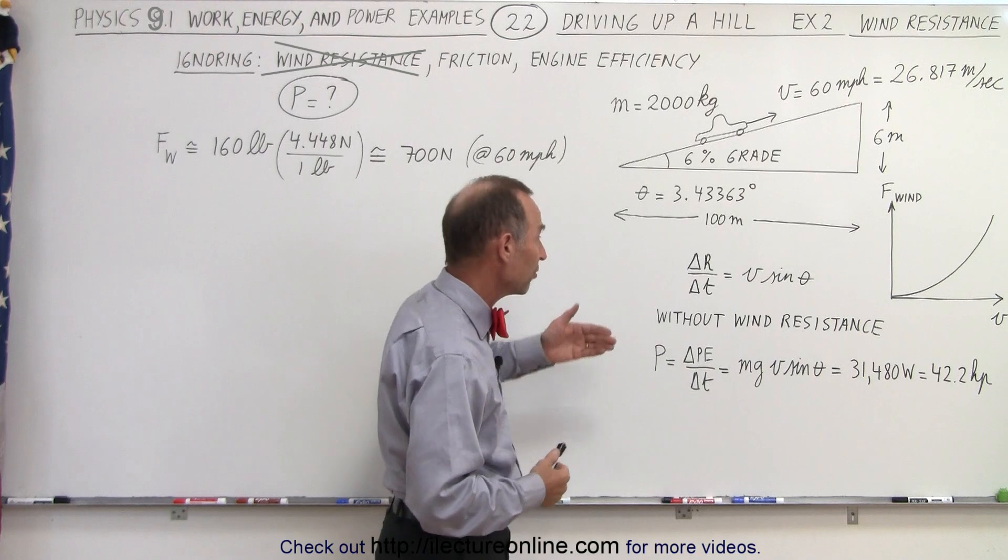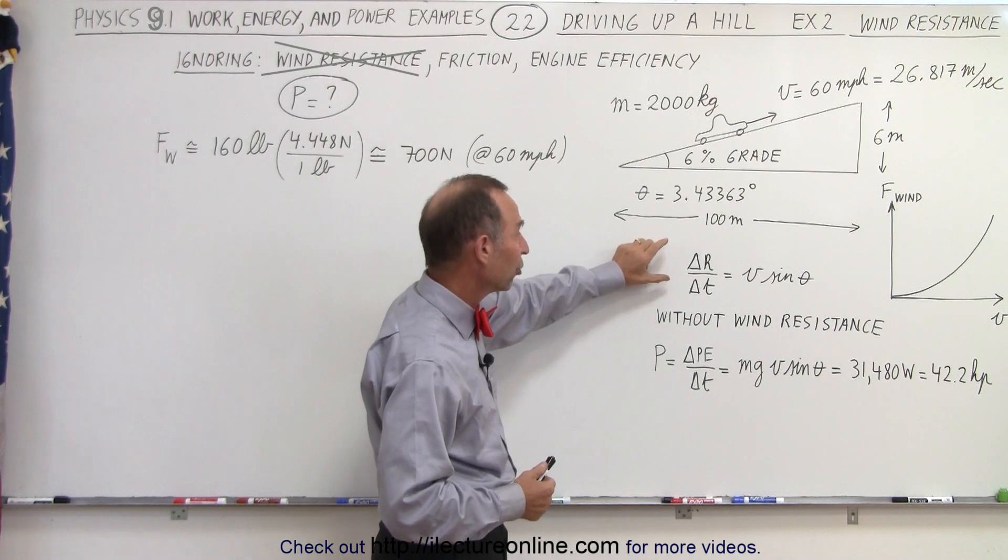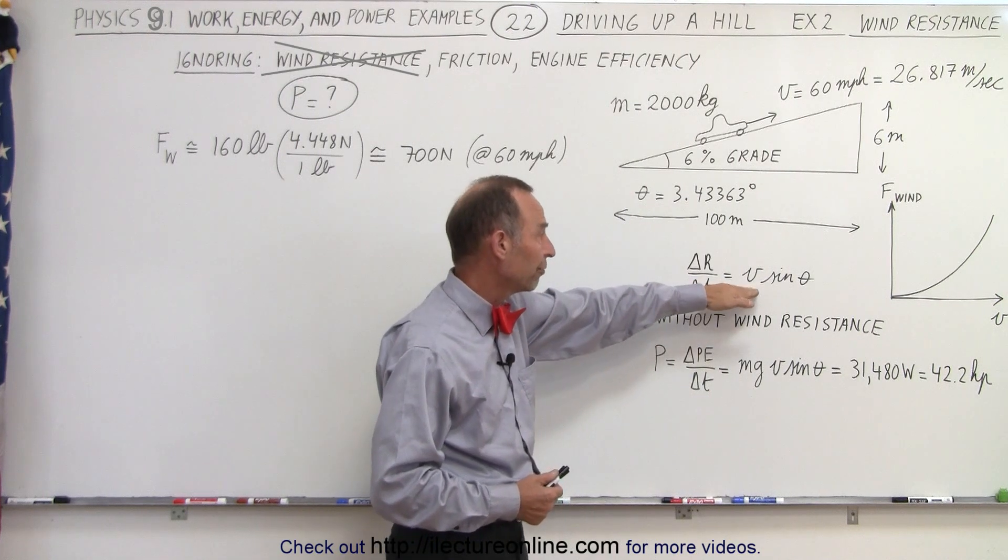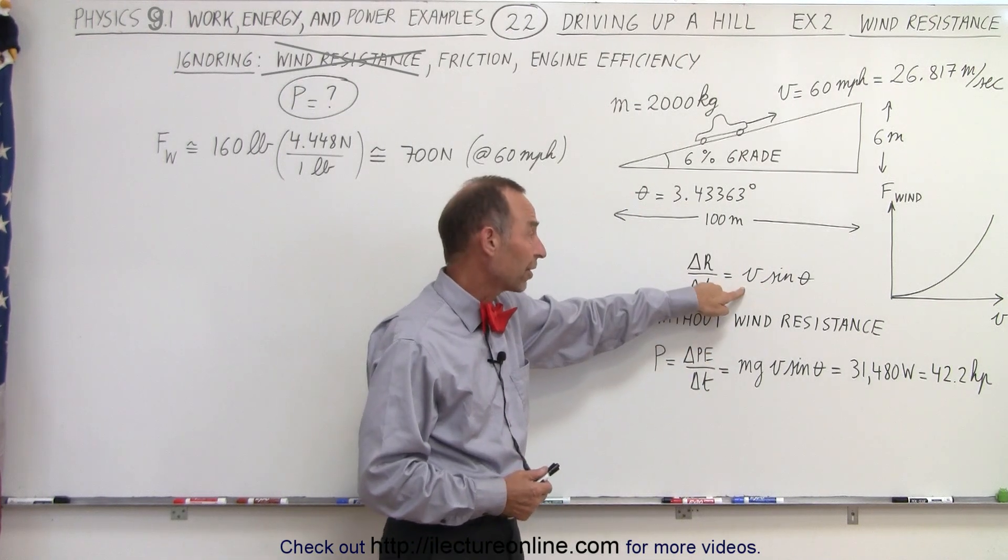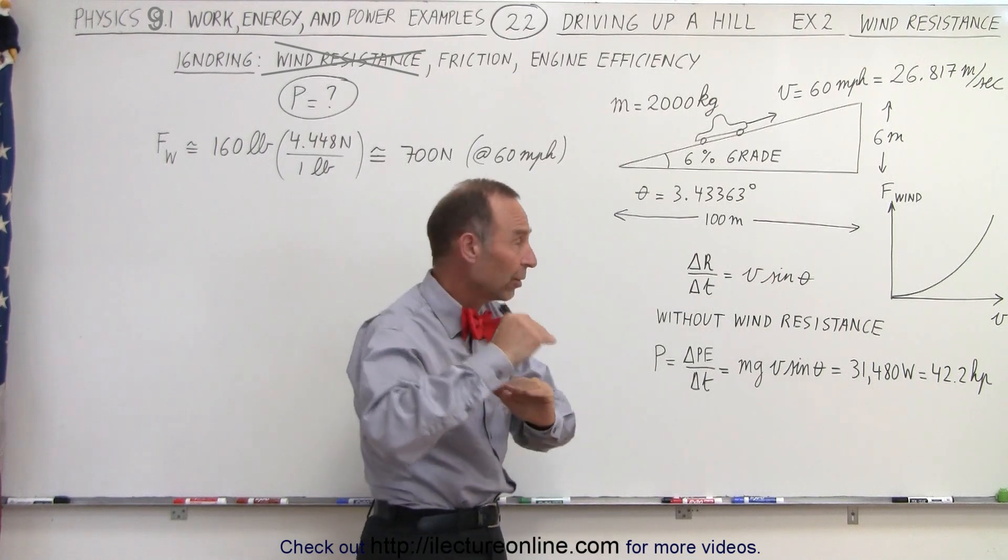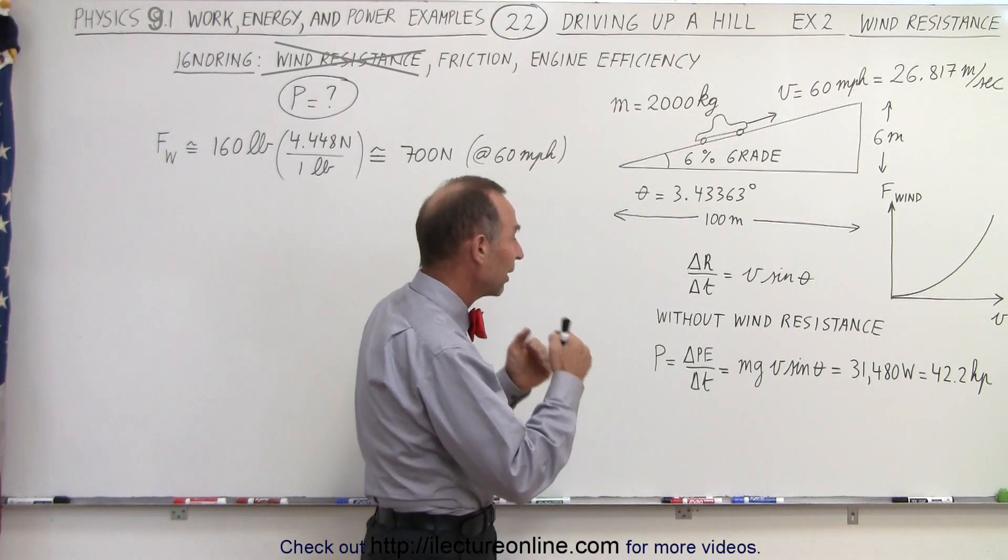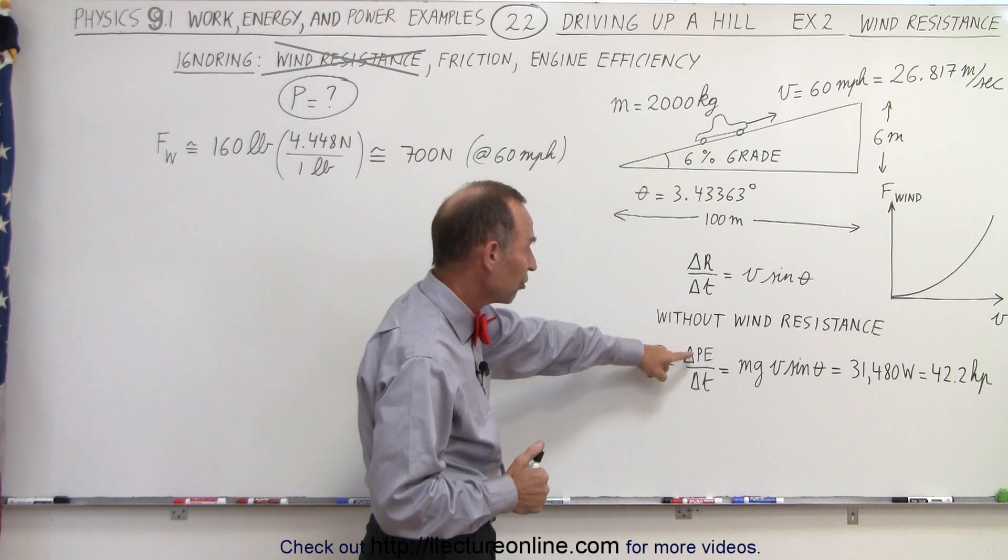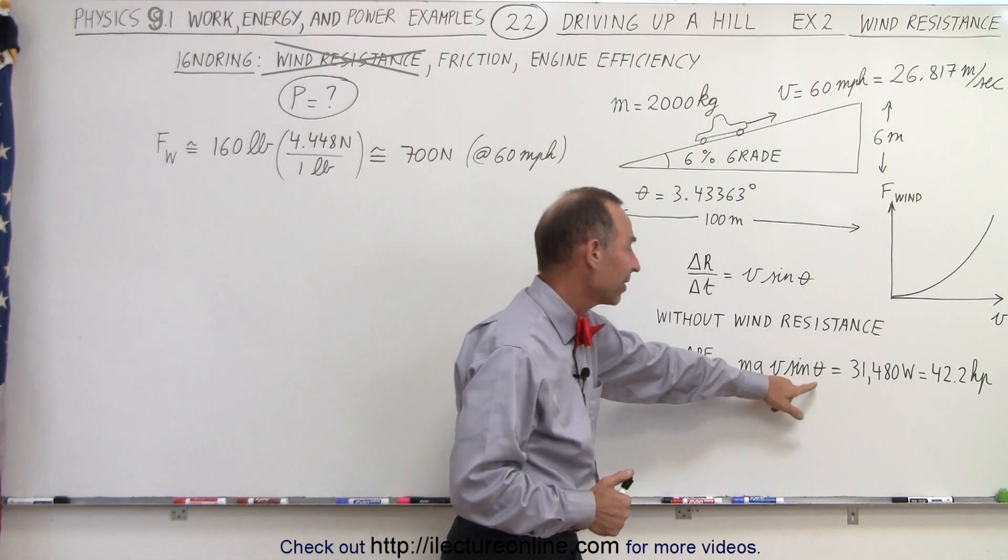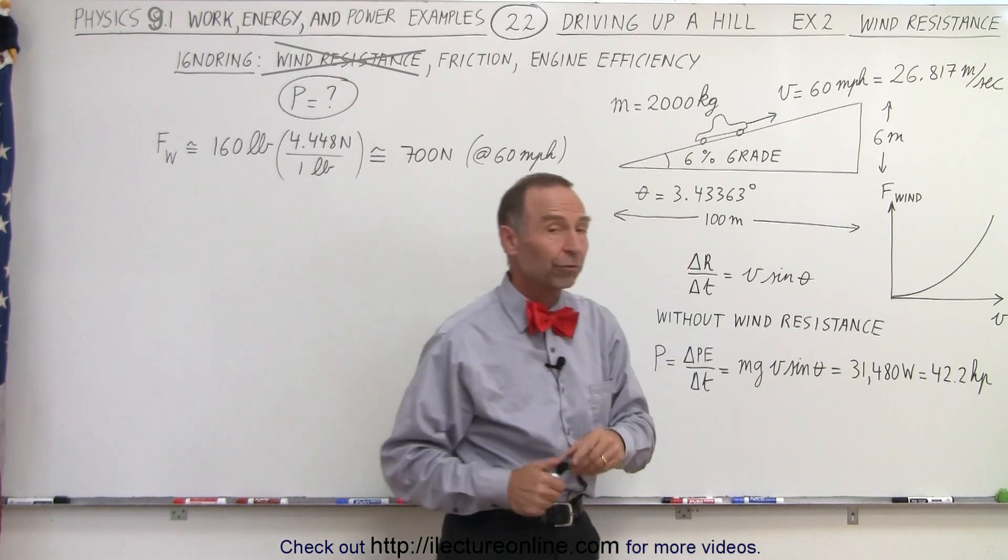We found that the equation depended upon the change in the height as a function of time, which can be equated to v sine theta. The velocity of a car times sine theta equals the change in the height as a function of time, and then we calculated the change in potential energy per unit time, which is mg times v sine theta, which is 31,480 watts.